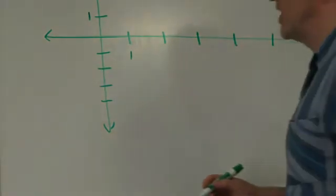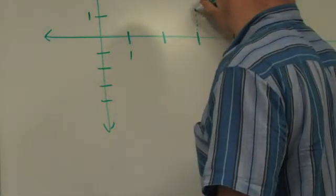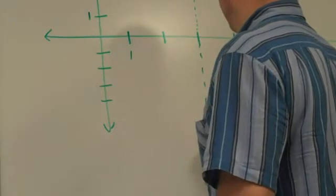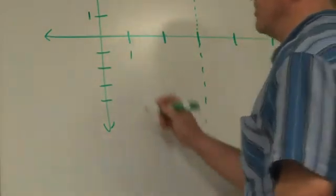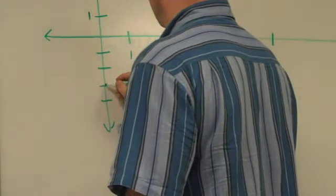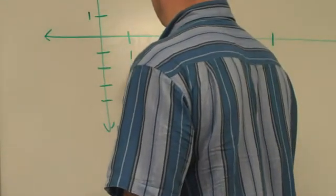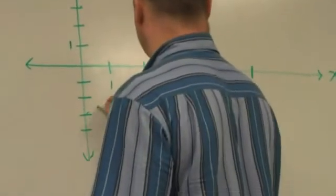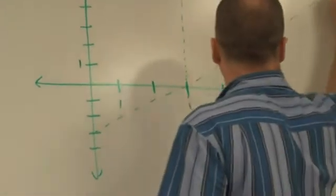So I have a vertical asymptote at x equals three, correct? I have a slant asymptote of x minus three, slope of one, up one, up one, over one, up one, over one. There we go. Which is going to look like that.